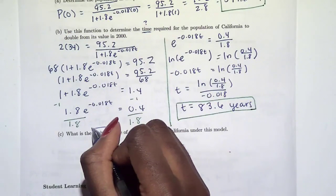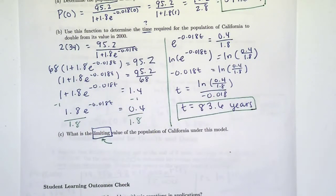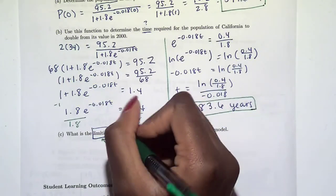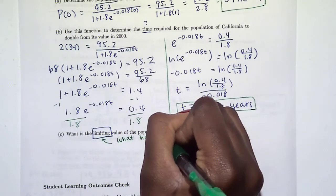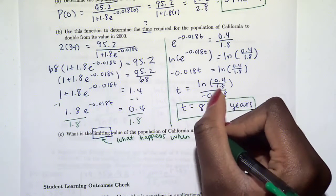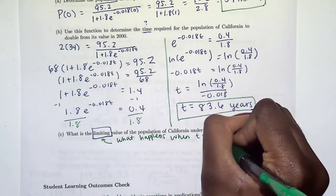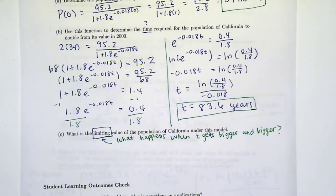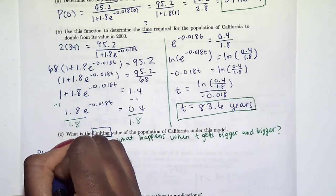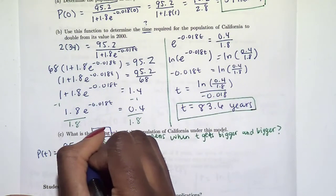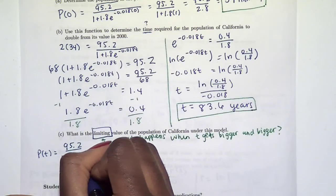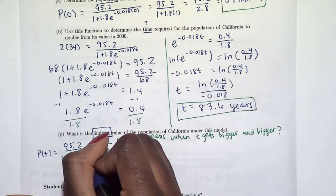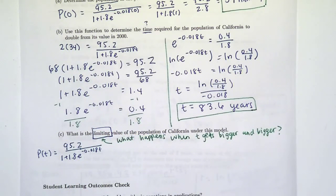Basically it means what happens when t, the time, gets bigger and bigger, so after longer periods of time. What happens when t gets bigger and bigger? Let's see exactly what happens. We're going to use the function that we were given.